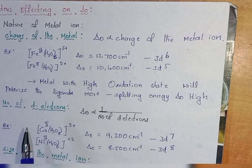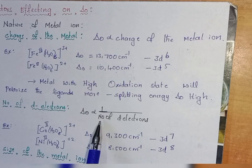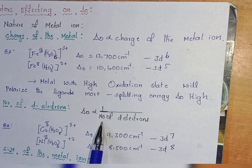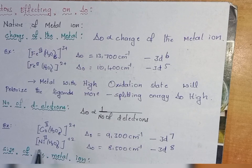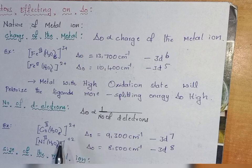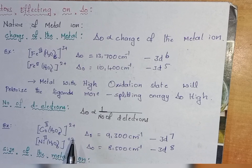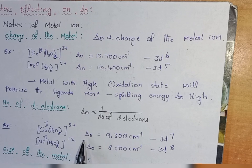The next factor is the number of d electrons. Delta O is inversely proportional to the number of d electrons. A metal complex with fewer d electrons will have a higher value of delta O, because fewer d electrons means less electron density. Therefore, there is closer attraction between the metal and ligand orbitals, the repulsion will be more, and the splitting energy delta O will be high.